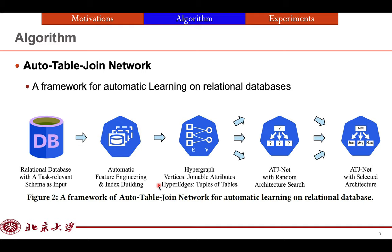Second, we do some data processing, including some automatic feature engineering and index building. Next, we build a hypergraph logically, where vertices are joinable attributes and hyperedges are tuples of tables. And then we build a graph neural network on this hypergraph and launch multiple training instances of ATJNet with random architecture search, where each instance has different architecture. Finally, we chose the best architecture as the final model of ATJNet.